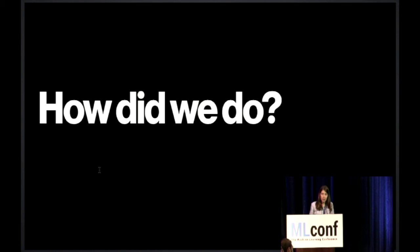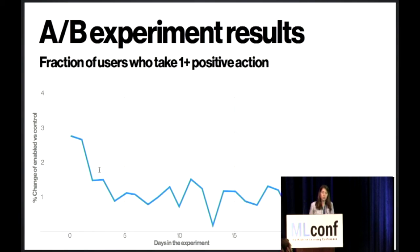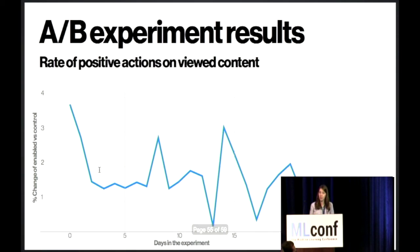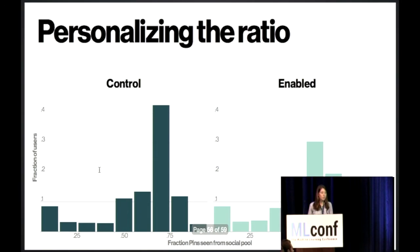All right. So we put this model into practice in our own systems. So let's see how it went. We found that we were able to increase the fraction of users who took a positive action. So we were able to help some users who really weren't finding any content at all. We also increased the rate of positive actions taken on our viewed content. So we were able to be more efficient with the content that we showed to users. And finally, we really did personalize these ratios. So if you look in the control graph, there's a very sharp peak where that is how many pins we showed to users that were from the social pool. And we've really spread that peak out across all the different groups of users, showing that we've really figured out who likes what, who likes to see this content and who doesn't.